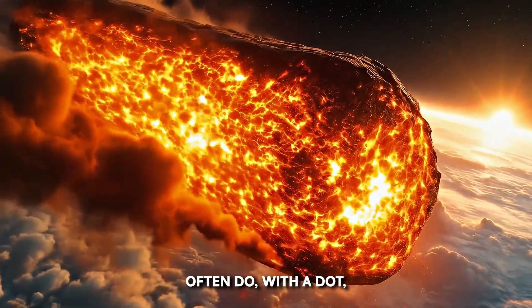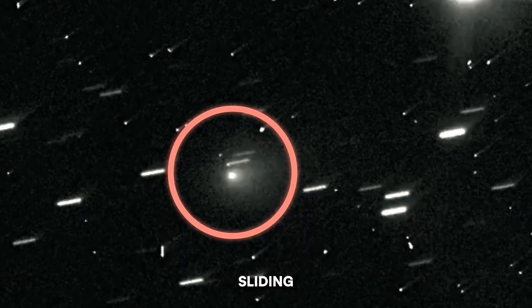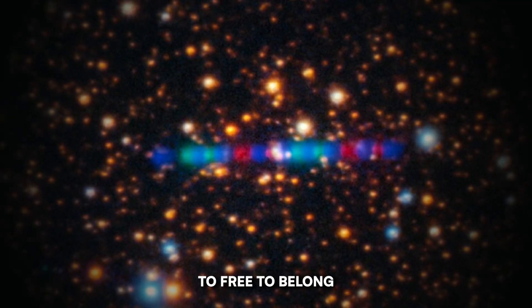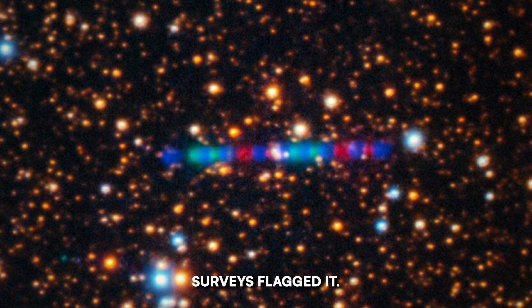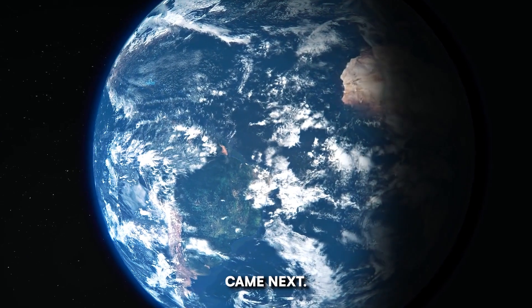It started, as these things often do, with a dot. A small, stubborn point of light sliding against the starfield, too fast, too slanted, too free to belong to our sun. Surveys flagged it. Software ranked it. Astronomers checked it.